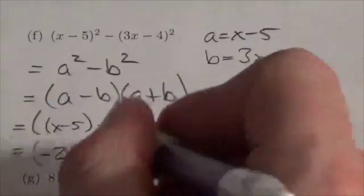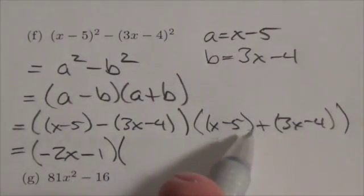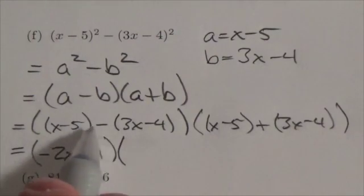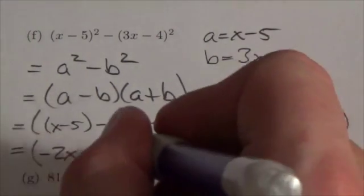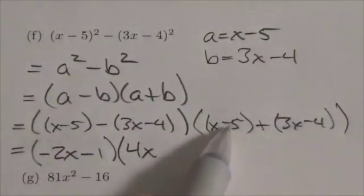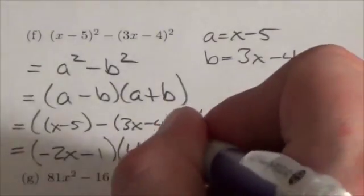Over here I do a similar sort of thing, except this time it's addition, so it's a little bit easier. Then I don't need to worry about signs changing here on me. So this is going to be x plus 3x, which is 4x, and then negative 5 plus negative 4, which will be negative 9.